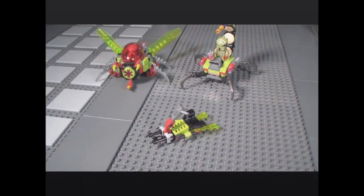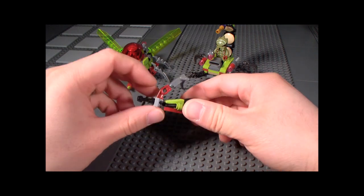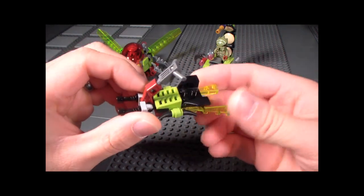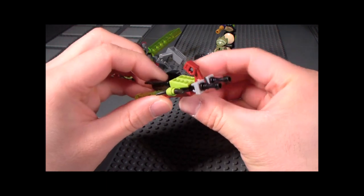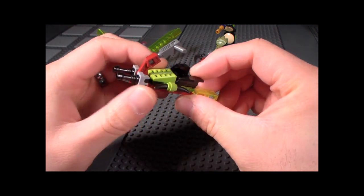First we'll take a look at the alien space flyer which is more like a jet ski in space. I like the concept behind it and I think this would have made a really nice poly bag just by itself.